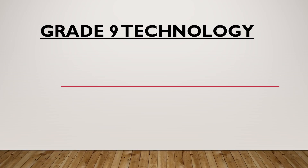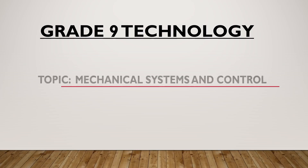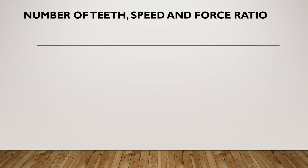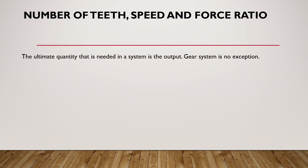Hello once more. Today we are treating Technology Grade 9 and our topic is Mechanical Systems and Control. Focusing on gear ratio, we've already done gears in Grade 8 but now we're getting deeper. We start with three key quantities: the number of teeth, the speed, and the force — which are crucial in gear calculations. The ultimate quantity needed in any gear system is the output.